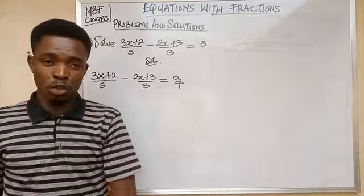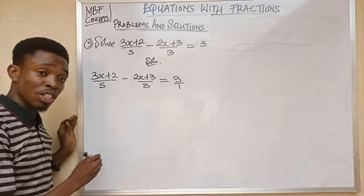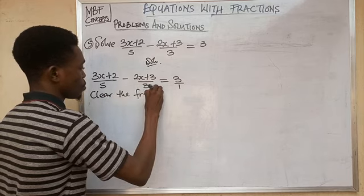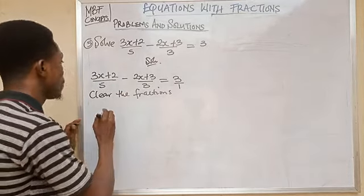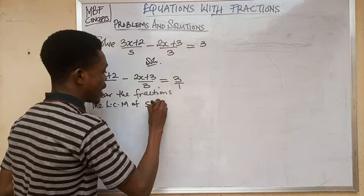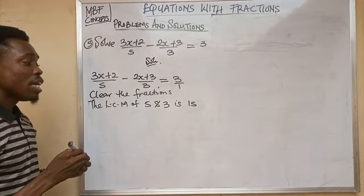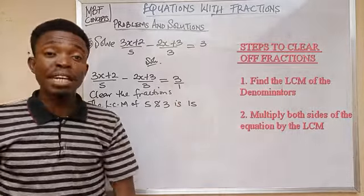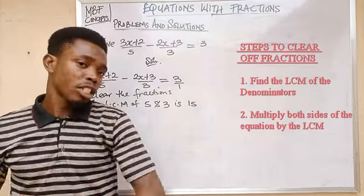Now we have 3x plus 2 over 5, minus 2x plus 3 over 3, equals 3 over 1. We now have 3 fractions with denominators 5, 3, and 1. We clear the fractions by finding the LCM of the denominators. The LCM of 5 and 3 is 15, so we multiply the whole equation by 15.